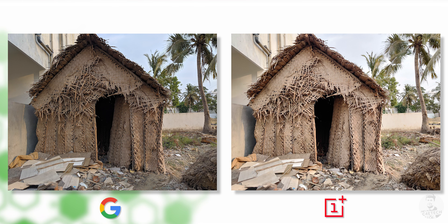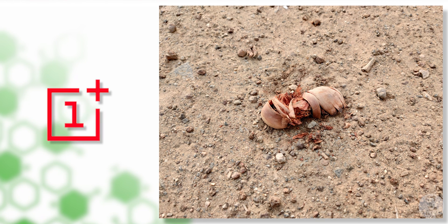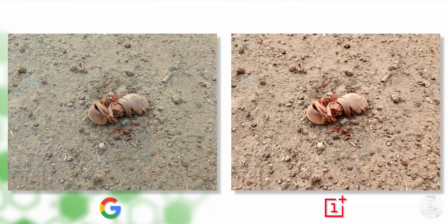In the G Camera, the colors are natural. But if you look at the stock camera shots, the image is a little bit warm and the colors are a little bit oversaturated.